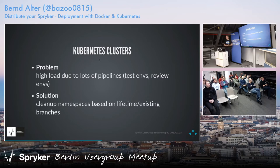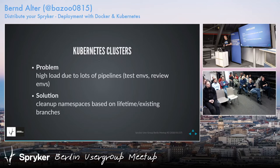For this, we created a basic garbage collection cron job. It cleaned up test environments after half an hour or an hour, since tests should not run that long. For review environments, we cleaned up after two days, assuming it wouldn't be needed anymore. This saved a lot of resources and significantly reduced load on the Kubernetes clusters.